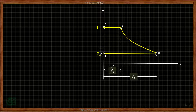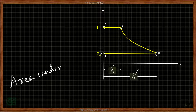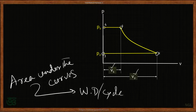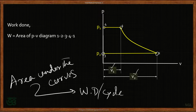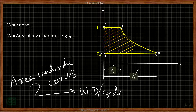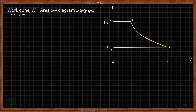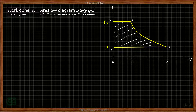In a PV diagram, the area under the curves represents work done per cycle. If we calculate the area of this PV diagram — that is, area 4-1-2-3-4 — that will give us the work done during one cycle. So the area 1-2-3-4-1 is what we need to calculate. To find the work done we must consider the required area of the PV diagram, 1-2-3-4-1. The work done is equal to that area.